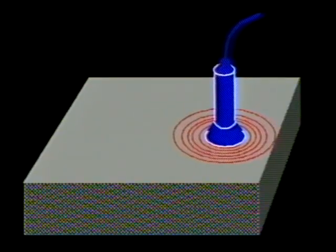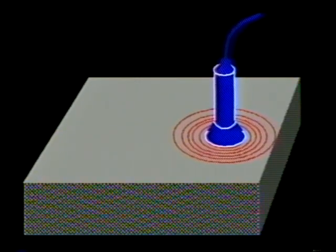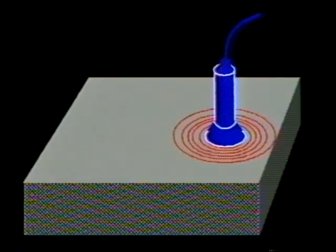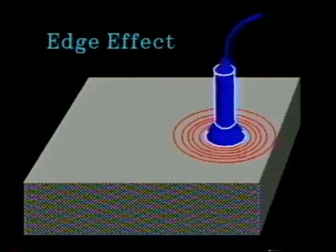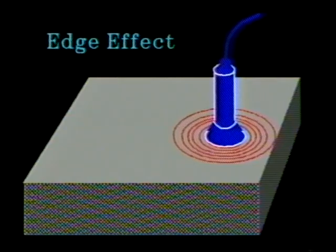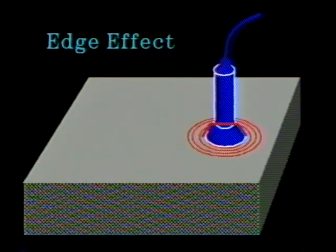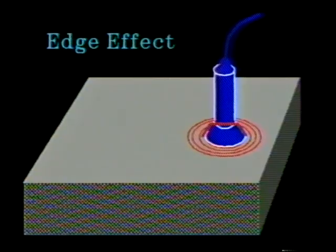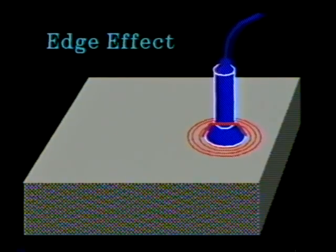As the coil approaches the edge of a test object, eddy currents become distorted by the edge signal. This is known as edge effect. Response to the edges of test objects can be reduced by the incorporation of magnetic shields around the test coil or by reducing the test coil diameter.